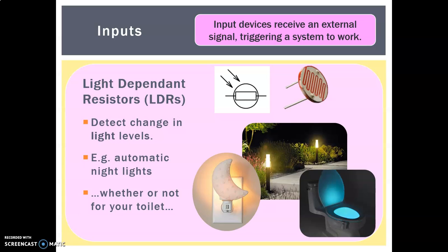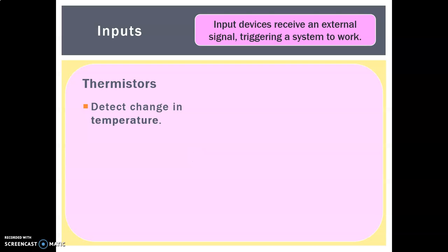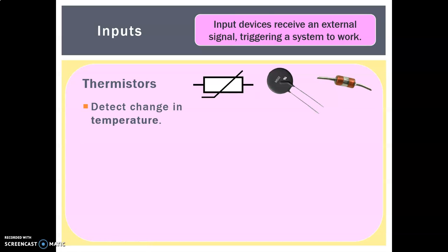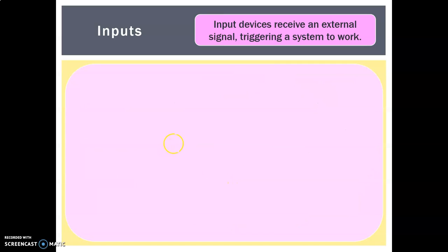Next we have thermistors — the name sounds like thermometer, with 'thermo' meaning temperature. They detect changes in temperature. The symbol has the basis of a resistor with a line through it indicating temperature rise. Examples include mouth thermometers, meat thermometers used in food technology, kettles, central heating systems, and car engines — anything where if the temperature gets too high you need some kind of output indicating a problem.